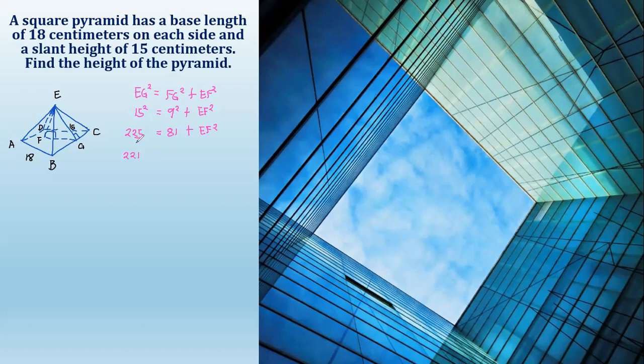So we have 225. This 81 is transferred to the other side of the equation. Since it's positive on this side, when transferred to the other side, it will change operation and become negative. So 225 minus 81 equals EF squared. So 225 minus 81 equals 144.